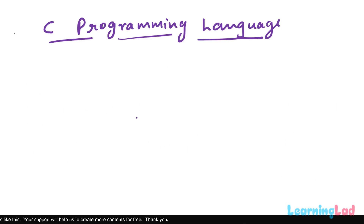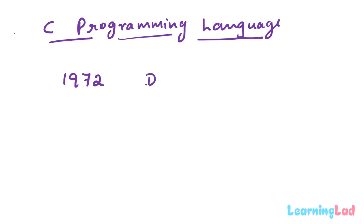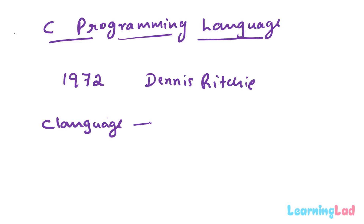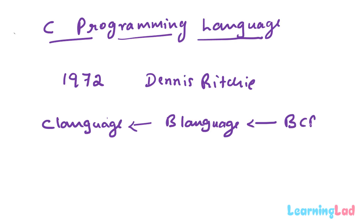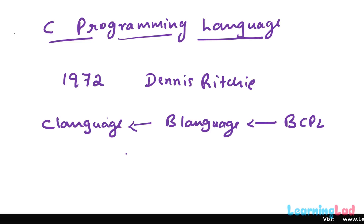Now let us see the history of C. The C programming language was invented in 1972 at Bell Laboratories in the USA by a team led by Dennis Ritchie. He called his new language C because it was the successor of an existing language called B, which was itself heavily influenced by an older language called BCPL. Originally, C was created to write operating systems and compilers, but because of its simplicity and features, C became one of the most popular programming languages and remains so to this day.